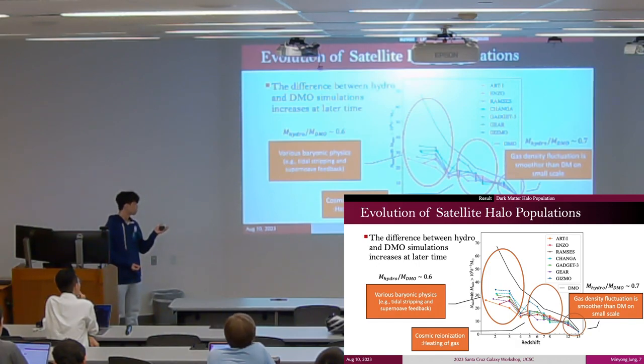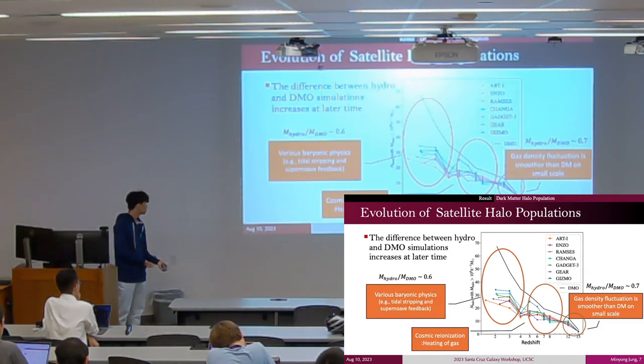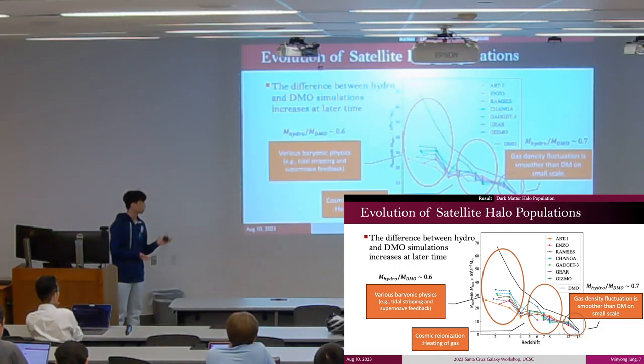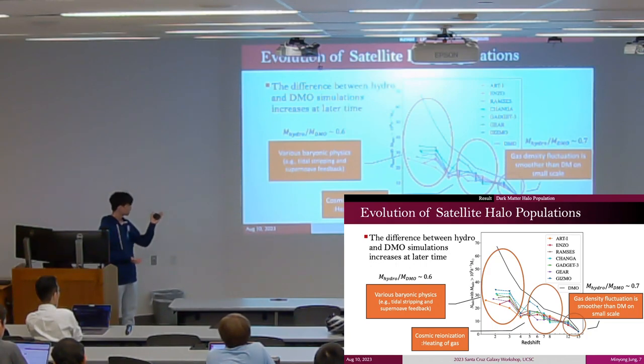Finally, after z=4, various baryonic physics such as tidal stripping by a stellar disk, ram pressure stripping, and supernova feedback heating of the gas hindered the growth of satellite halos.